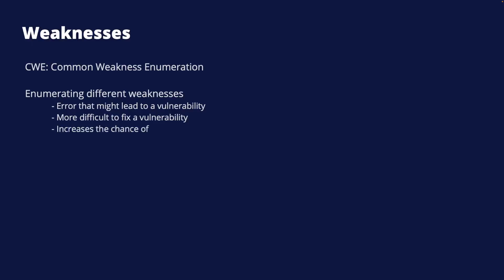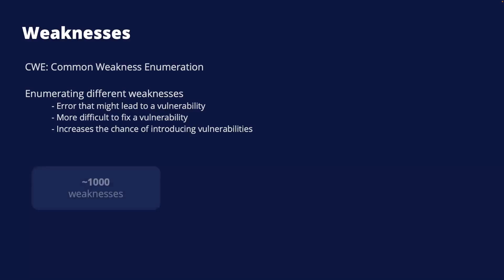Weaknesses also includes issues that increase the chances of introducing vulnerabilities, such as a large number of unconditional branches, which makes it difficult to understand and maintain the software. In total, the CWE list consists of about 1000 distinct weaknesses categorized in some different ways. The CWE list includes both software and hardware weaknesses that can have some security implication. Hardware weaknesses were added in 2020 due to a number of significant security issues related to hardware, such as Rowhammer, Meltdown and Spectre. The weaknesses are organized differently using views.